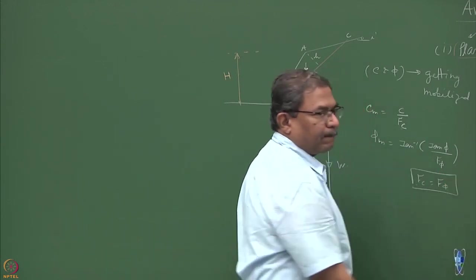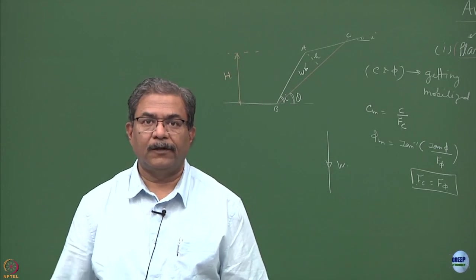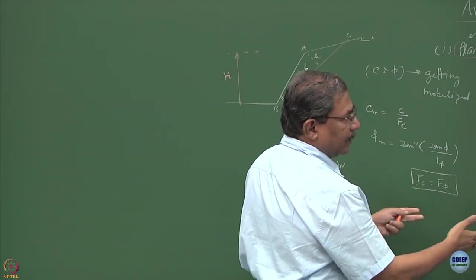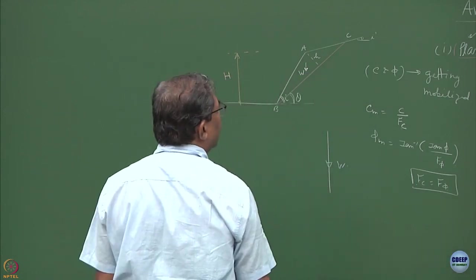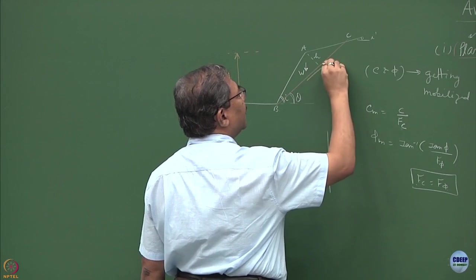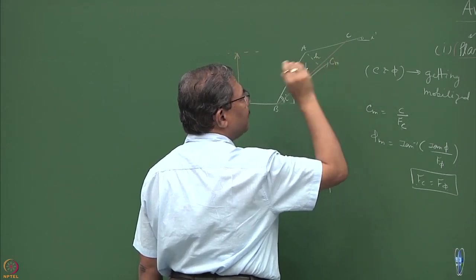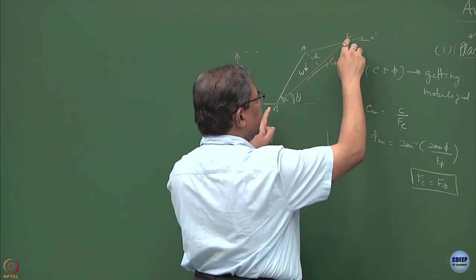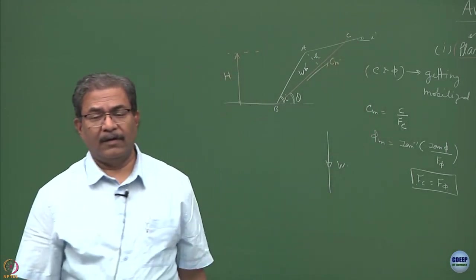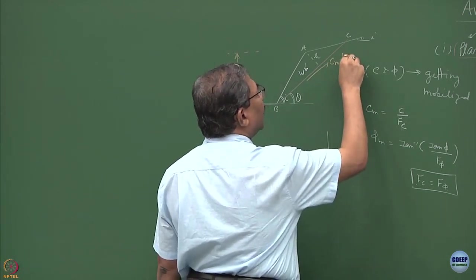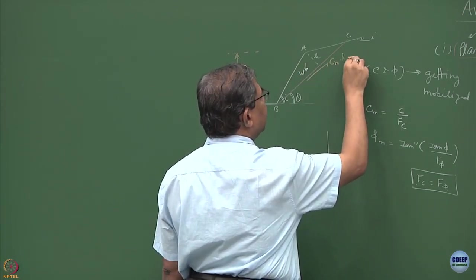Ideally FC should be equal to F phi. So we are going to talk about these type of situations subsequently. Just to begin with, let us show the forces acting over here. So this is the component of CM. Now CM is going to act on surface BC, so multiplied by length of the BC, the surface on which it is acting.